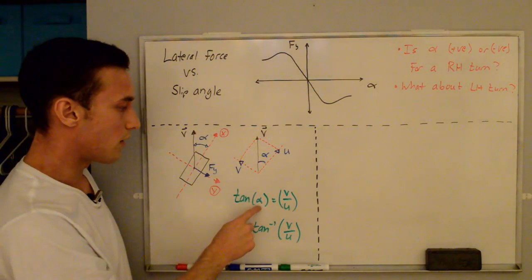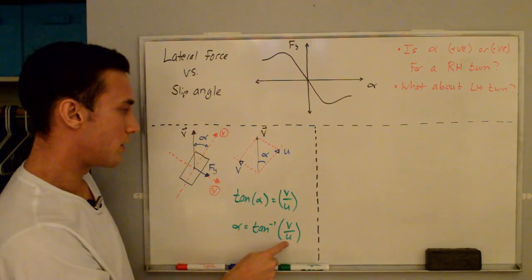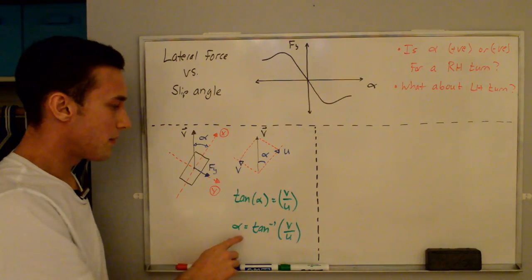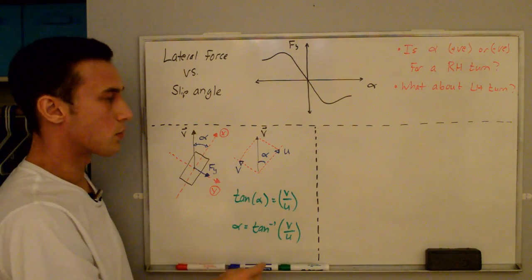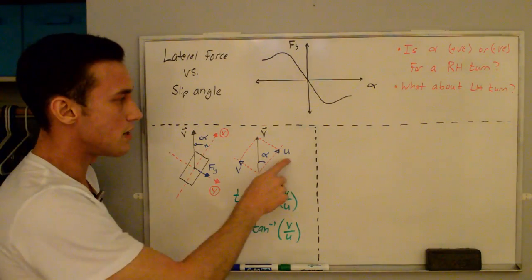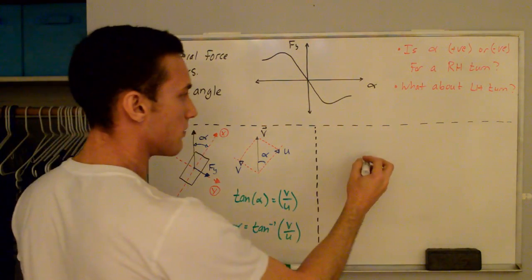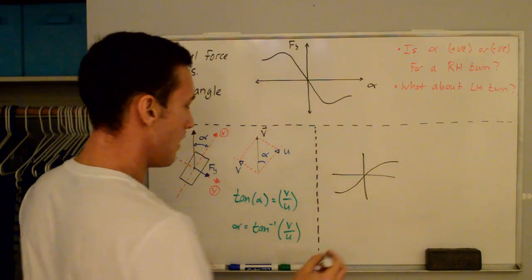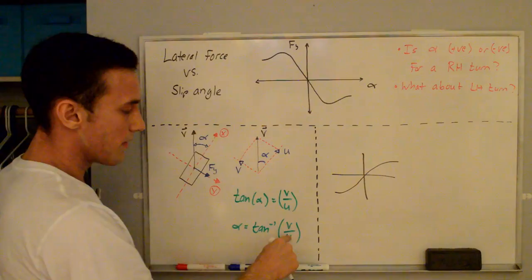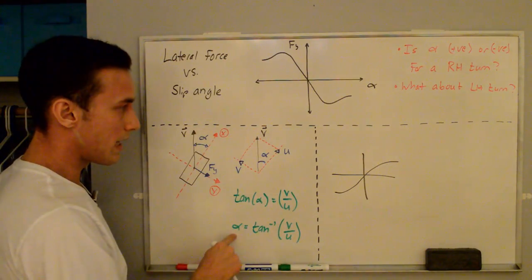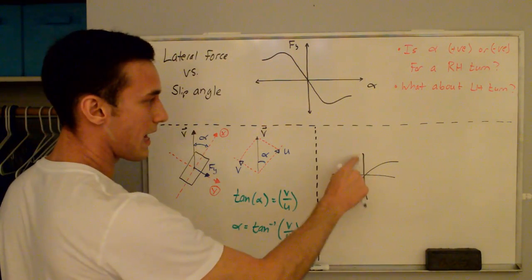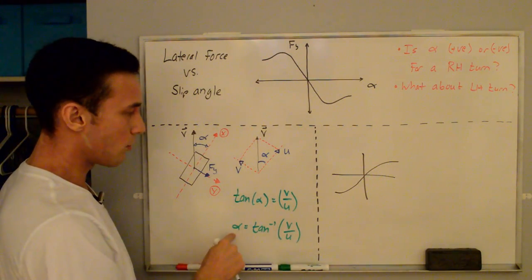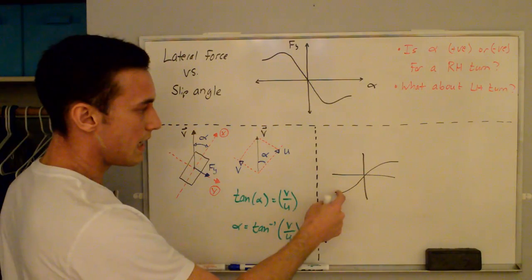Solving for alpha, we get the inverse tangent of v over u. The slip angle takes the sign of v, since u is always assumed positive. If you look at a plot of inverse tangent of x, if the term inside is positive, alpha will be positive; if the term inside is negative, alpha will be negative.